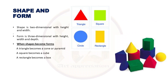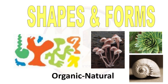The next element is shape and form. Shape is two-dimensional with height and width. Form on the other hand has depth too — that is height, width and depth. When shapes become forms, a triangle becomes a cone or pyramid, a square becomes a cube, a rectangle becomes a box. Shapes and forms can be classified into two types: geometrical as well as organic or natural.